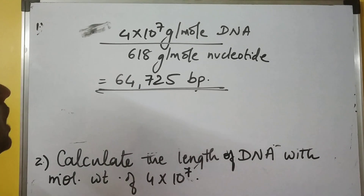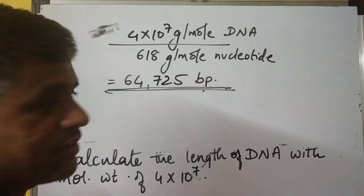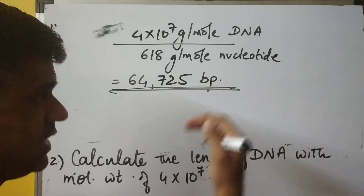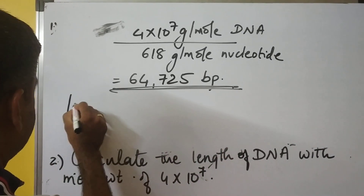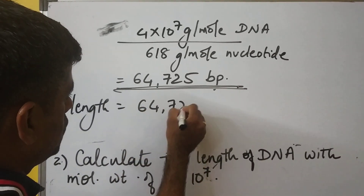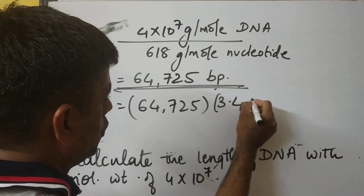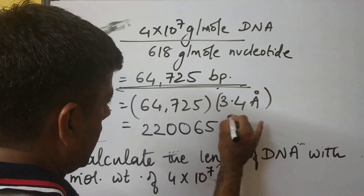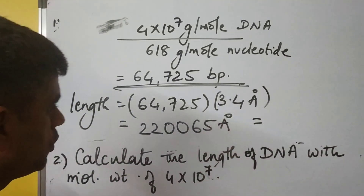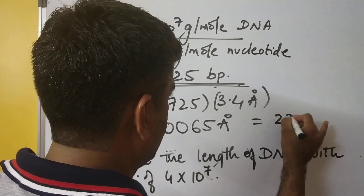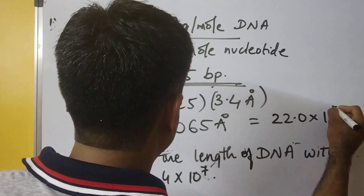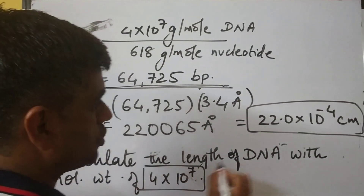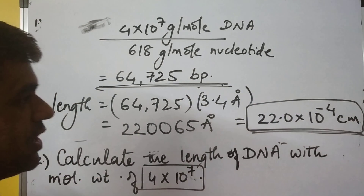So this DNA contains 64,725 base pairs. We know that the helix rise per base pair is 3.4 Ångströms. So the length of the DNA is 64,725 multiplied by 3.4 Å, which gives approximately 220,065 Ångströms. Converting to centimeters (1 Å = 10⁻⁸ cm), the length is 22.0×10⁻⁴ centimeters.